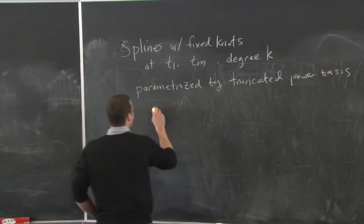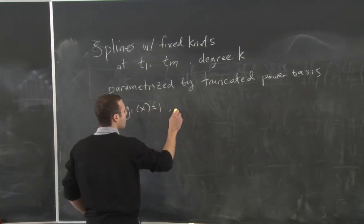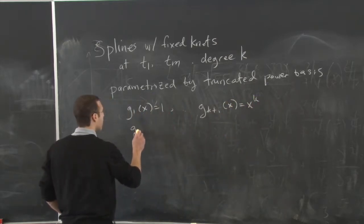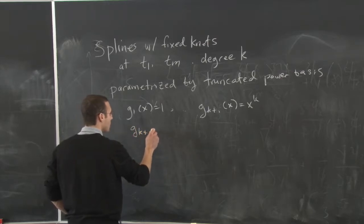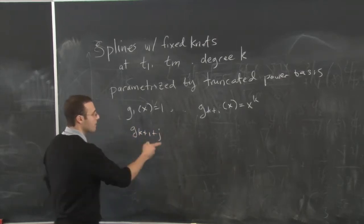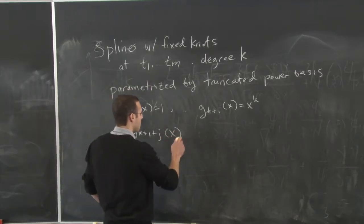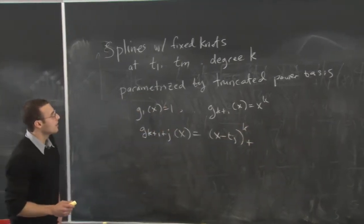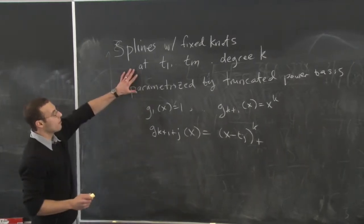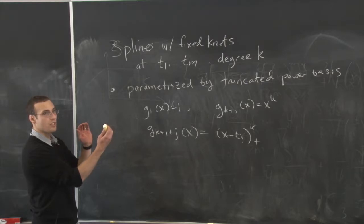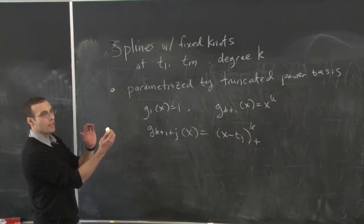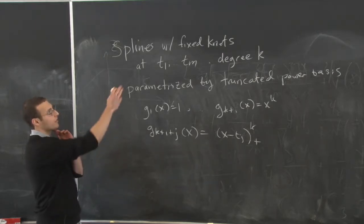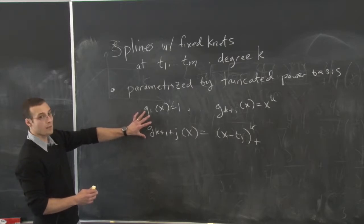Remember, that looks like: the first K plus 1 functions are just polynomials, and then there are K plus 1 plus M of them in total. We get one of these functions for each value of T, the knots, and it looks like X minus Tj to the power of K, positive part. These have the property that they're polynomials on each of the intervals Tj, Tj plus 1, and they're continuous, and they have continuous derivatives of all orders 1 through K minus 1. That's what characterizes the spline. Any such function can be written as a linear combination of these ones — that's what it means for this to be a basis.